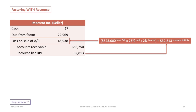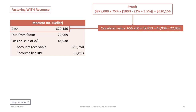Now we can determine the loss on sale. Without recourse, the loss was simply the amount factored times the finance fee. With recourse, we add the recourse liability to that previous calculation — so the loss on sale is the finance portion plus the recourse liability. We then determine cash as the leftover: $656,250 in receivables plus the recourse liability, minus the loss on sale, minus the amount due from the factor. Notably, this equals the same amount of cash as in the no-recourse scenario — $620,156 — because the 5% recourse is not included in the cash calculation; it represents a liability to reimburse the factor if receivables are uncollectible.